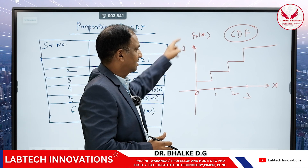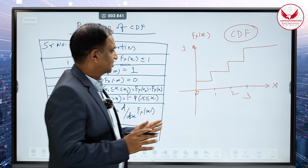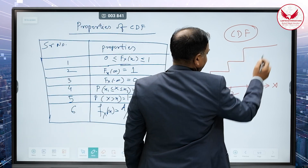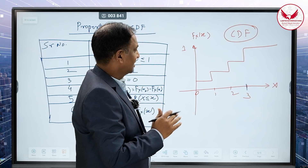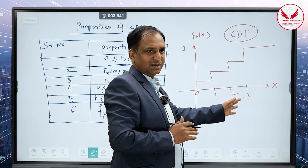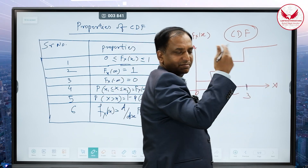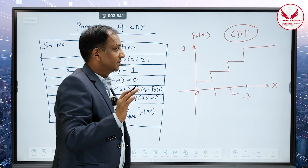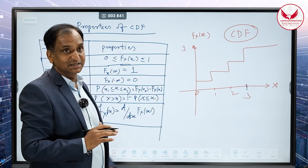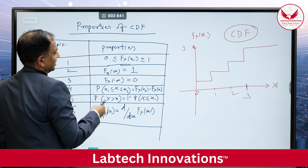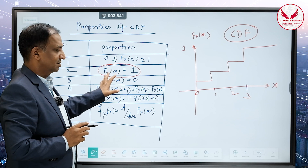If you look at this CDF, you will understand the properties. Its maximum value is always 1. If the final outcome is 3, so when the probability of this random variable is 3 or more than 3, it is always 1. When more than 3, it could be up to infinity. So the first property: CDF is always a non-decreasing function, and F(∞) equals 1, which is easy to remember.